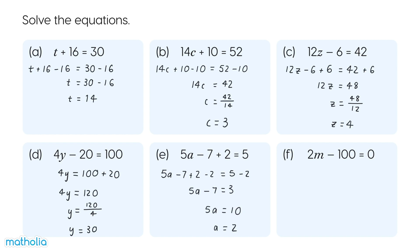F. 2M minus 100 equals 0. Add 100 to both sides. 2M equals 100. Divide both sides by 2. M equals 50. We have solved the equation.